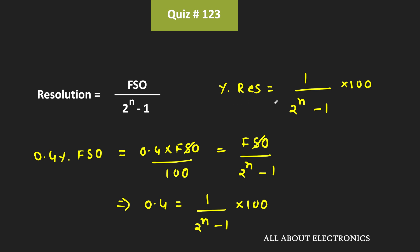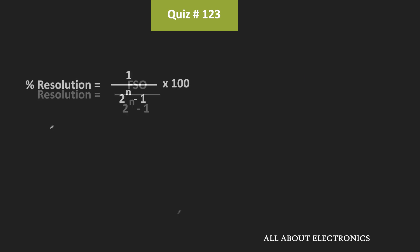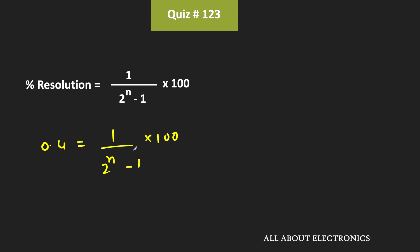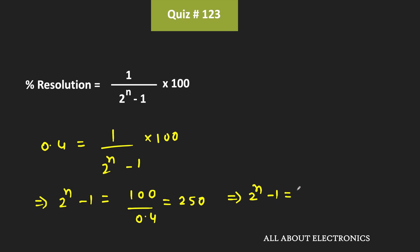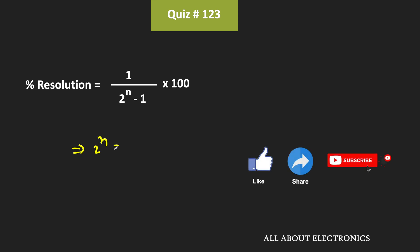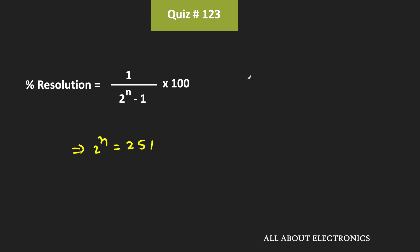So this percentage resolution is equal to 0.4%, meaning 0.4 equals 1 divided by 2 to the power n minus 1, times 100. Therefore, 2 to the power n minus 1 equals 100 divided by 0.4, which equals 250. That means 2 to the power n is equal to 251. We know that when n equals 7, then 2 to the power 7 is equal to 128.